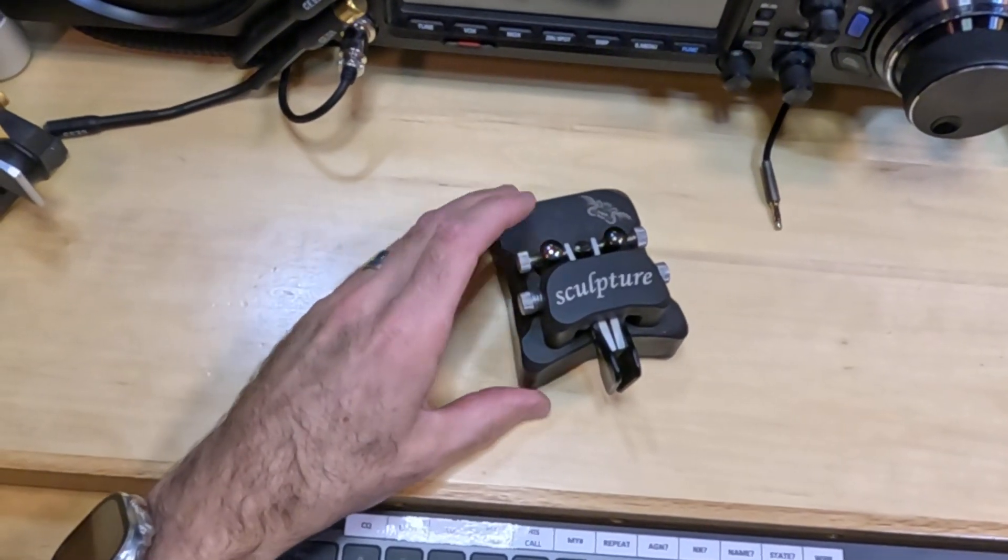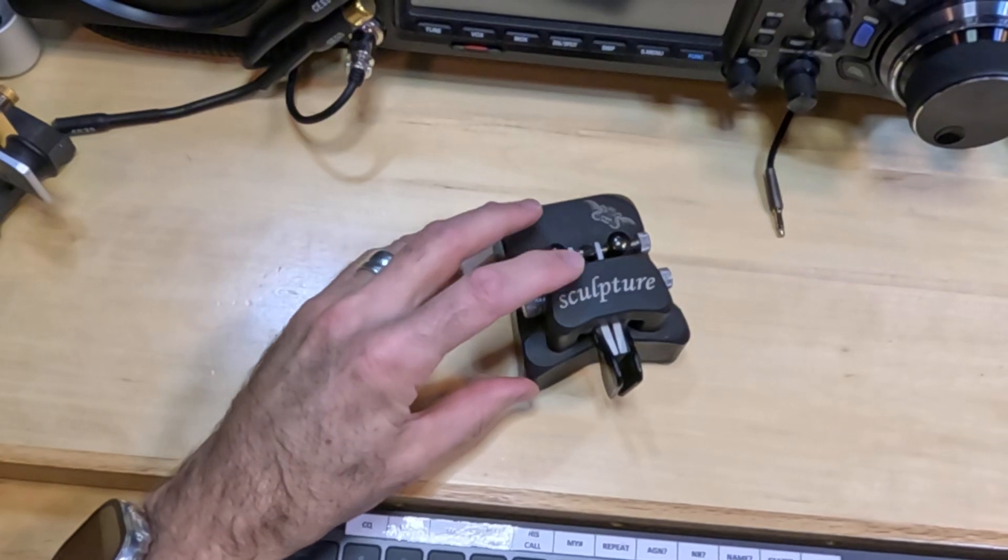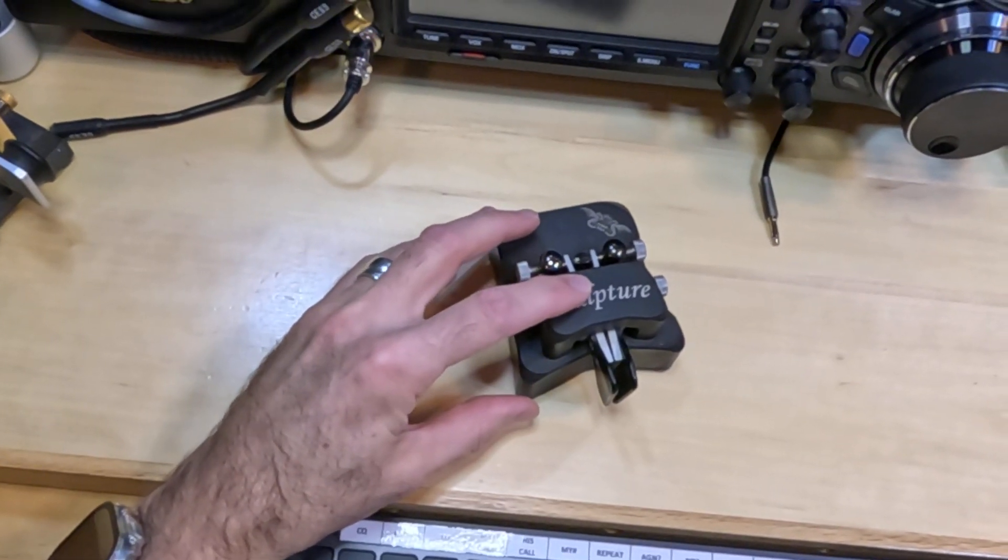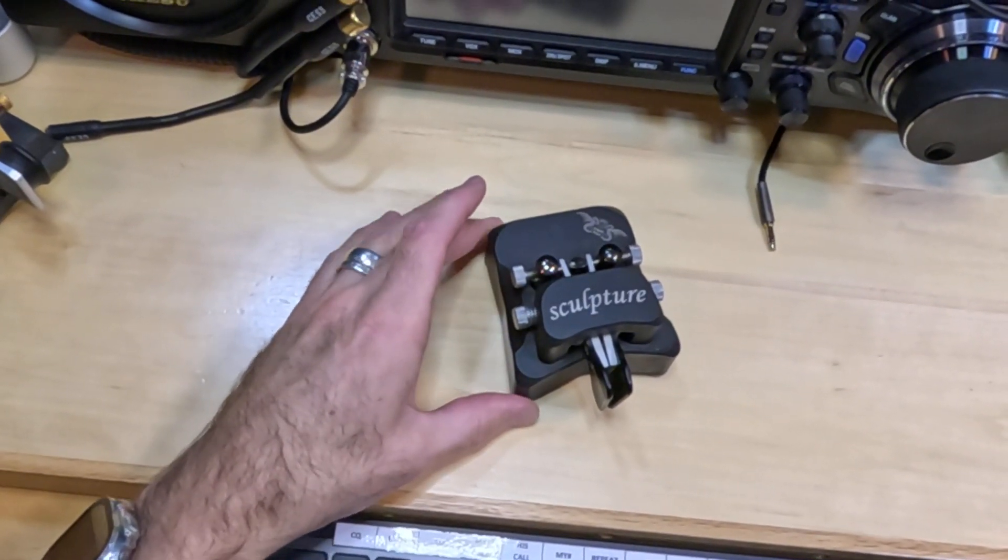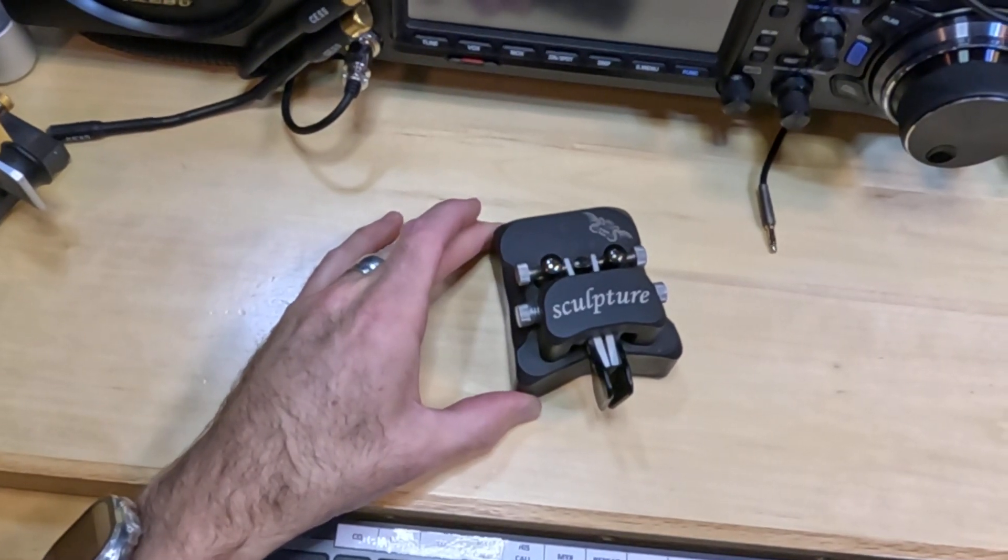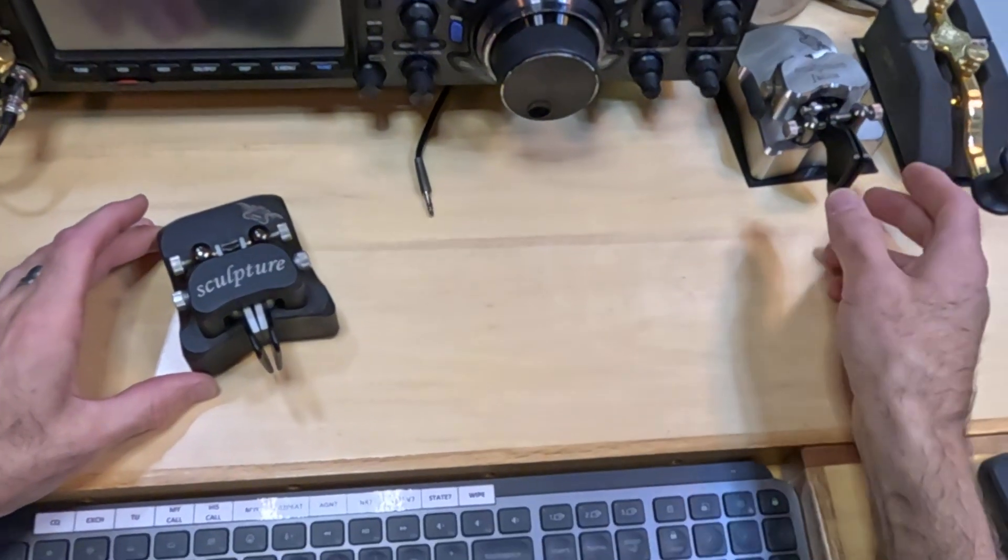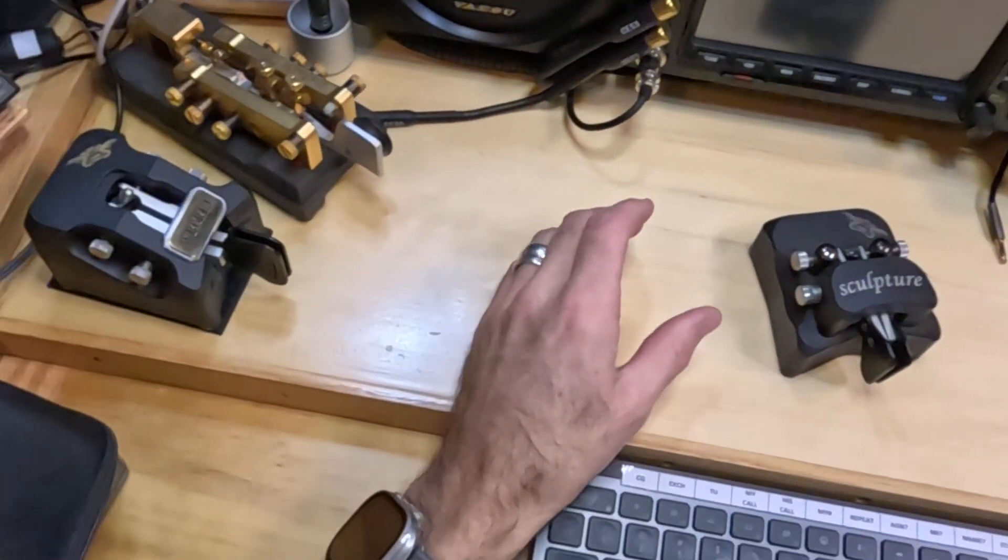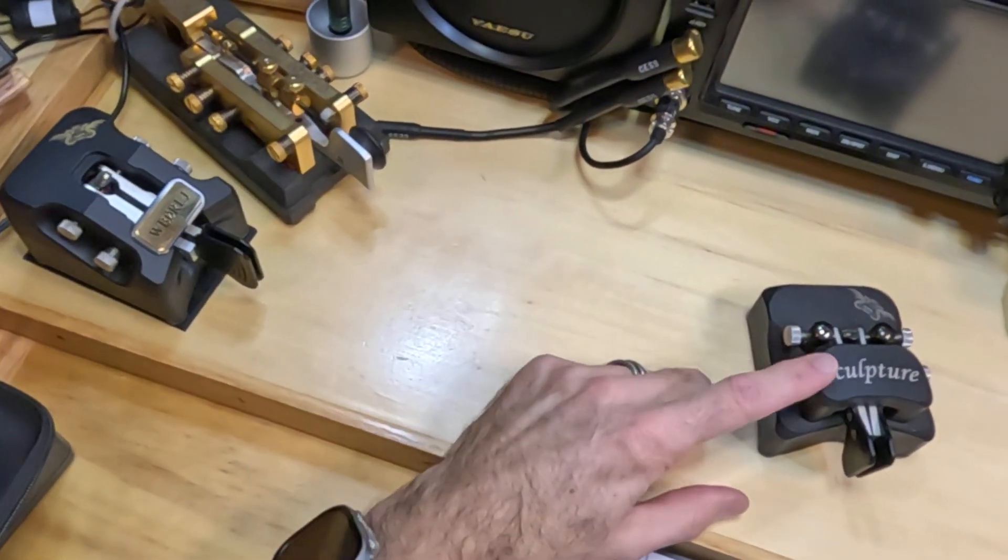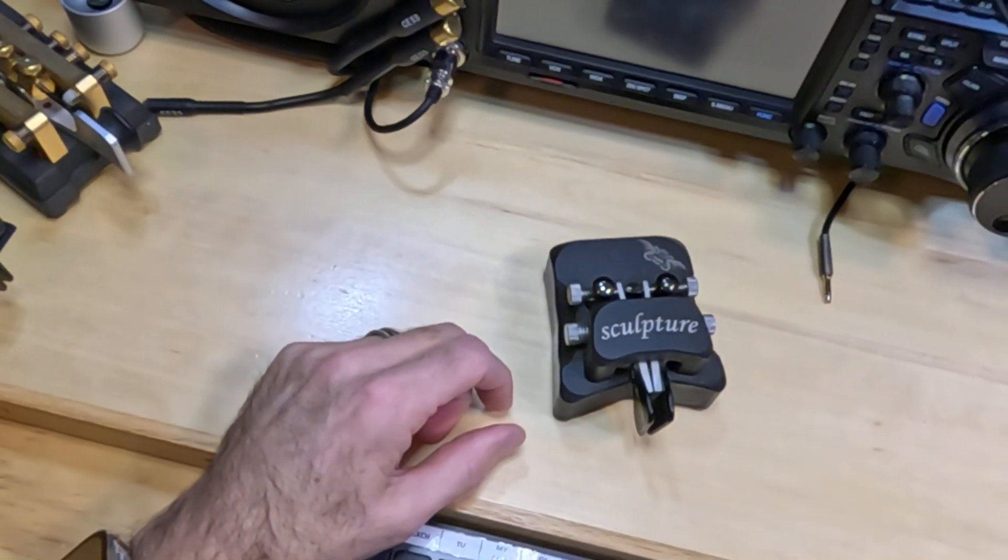In my case I've got a Begali Sculpture Black. This particular key I keep in the car with me all the time and I use it on POTA activations. I've got a Sculpture Janus, Sculpture Magnum, and another regular Sculpture in stainless steel.